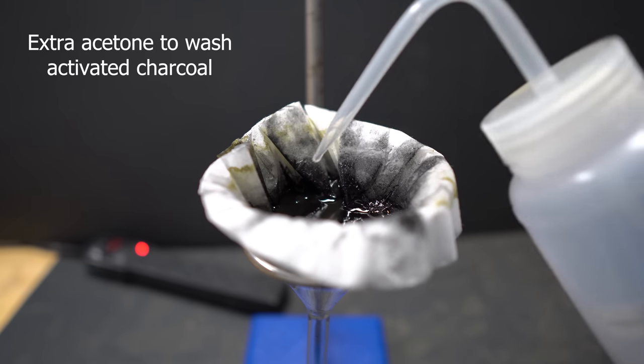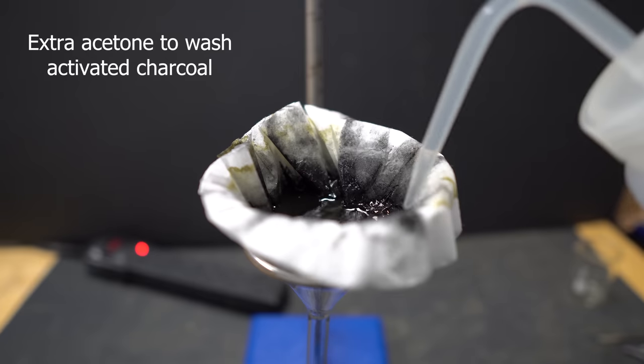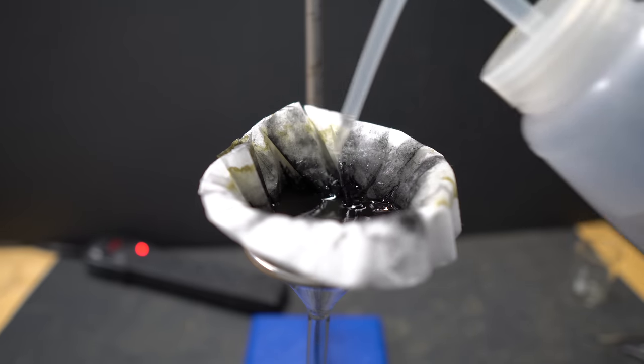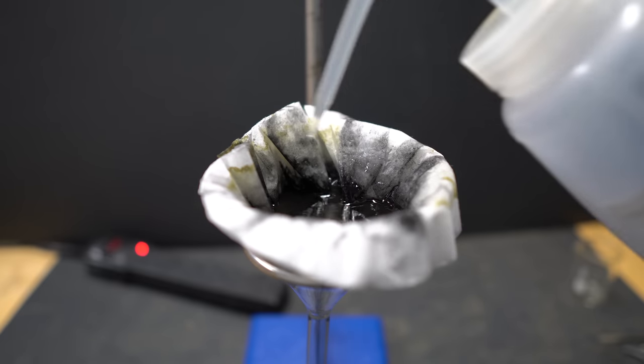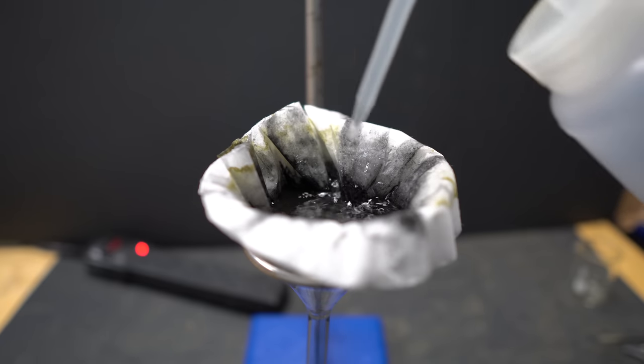I used an excess amount of acetone just to make sure that all the Salvinorin A was pushed through the carbon and down into our beaker. A column would have been way more efficient and way better, I just didn't have one and had to make a makeshift one.